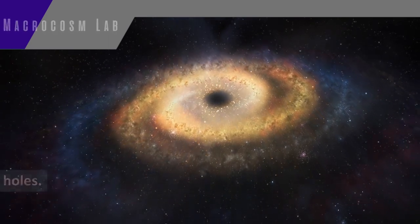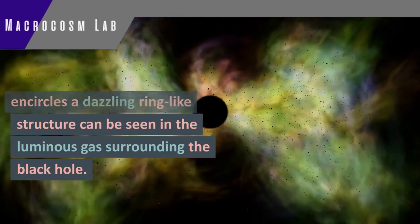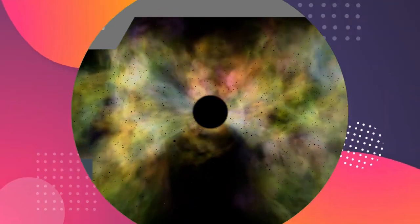Light does not come from black holes. A dark core area that resembles a shadow, encircled by a dazzling ring-like structure, can be seen in the luminous gas surrounding the black hole.